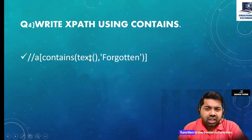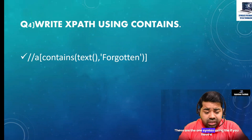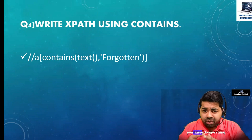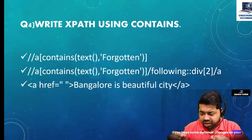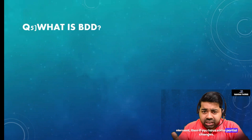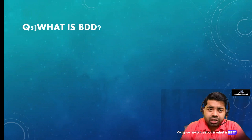The next question is: write an XPath using the contains() function. The contains() function is one of the most powerful XPath functions. You use it when you have a longer string, when there are dynamic changes on your element, or when there are partial changes — the contains() function will not fail in those cases. When you use the contains() function, your script will not fail.